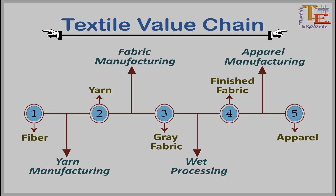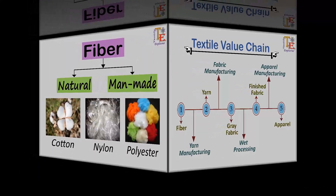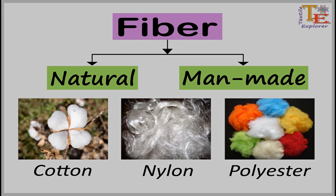Fiber is a natural or chemical substance consisting of flexibility, which has a high ratio of length to its diameter. Fibers are mainly two types: one is natural fiber and the other is man-made fiber. Here are some examples of textile fibers.